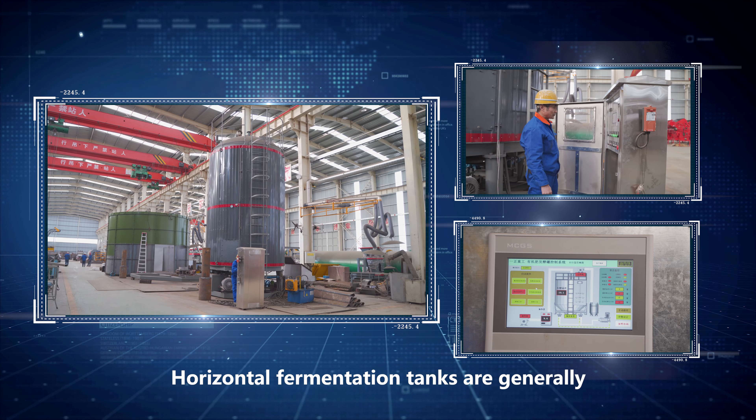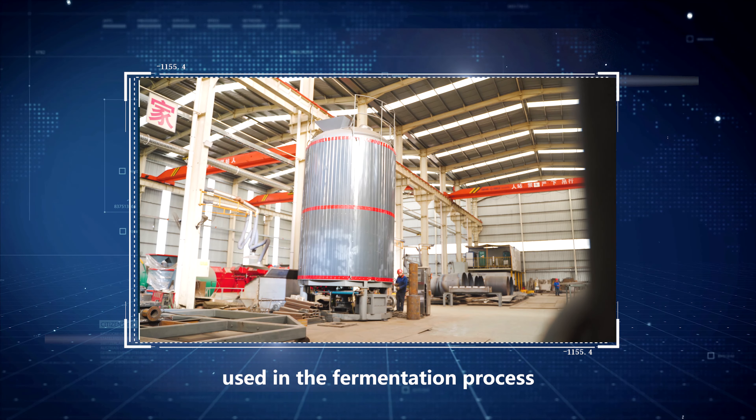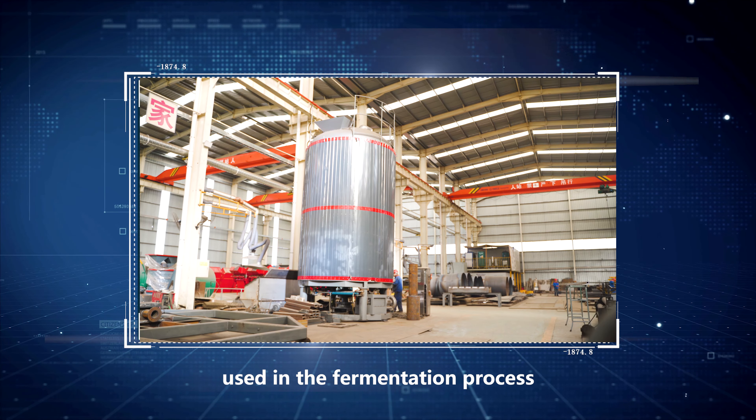Horizontal fermentation tanks are generally used in the fermentation process. Crawler-type compost turners and chain plate compost turners are common equipment types. The horizontal fermentation tank is mainly used for high-temperature aerobic fermentation of livestock and poultry manure, kitchen waste, sludge, and other waste.